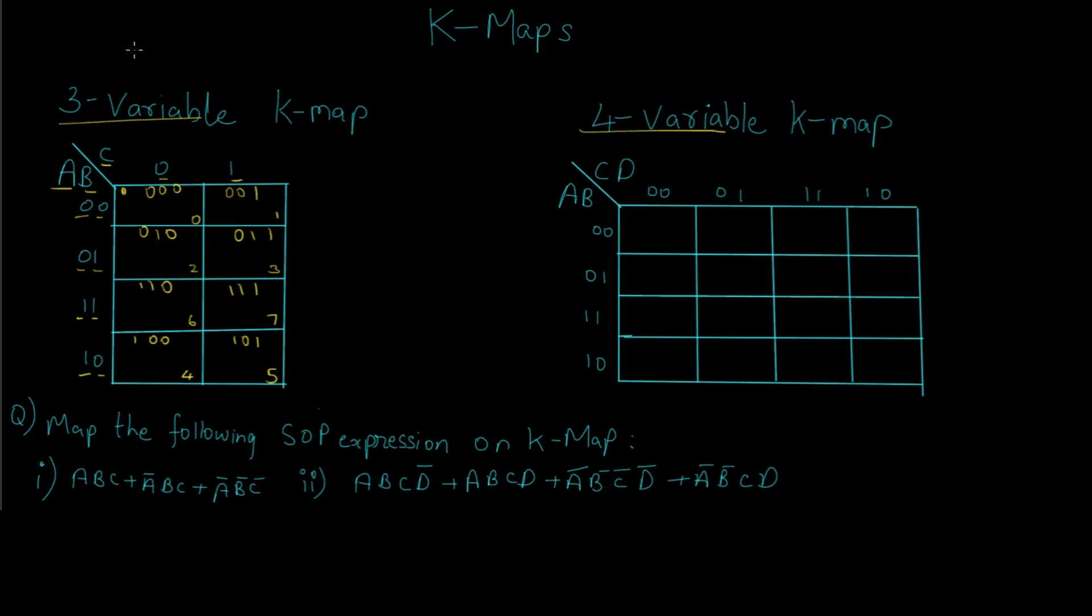Now let's take an example of a Boolean expression. Here you can see I have written question 1 wherein we have to map the following SOP expressions on the K-map.